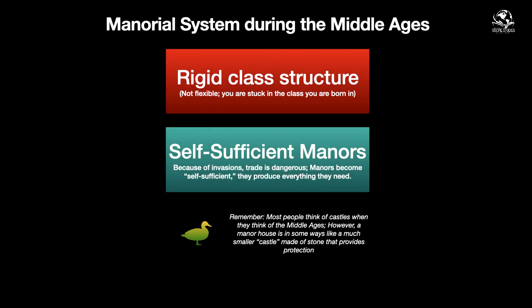The manorial system is confusing because you have feudalism and also the word manorial system, which comes from the word manor - they refer to the same thing. Within the manorial system you have a rigid class structure - it's not flexible, you're stuck in the class you're born in. Because of invasions, trade is dangerous, so manors become self-sufficient: they produce everything they need, and no one wants to leave to trade with another town.